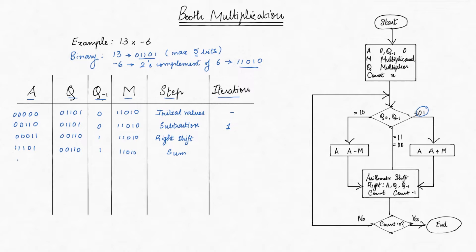Next, we perform a right shift through A, Q, and Q-1. Now two iterations of the algorithm are done.